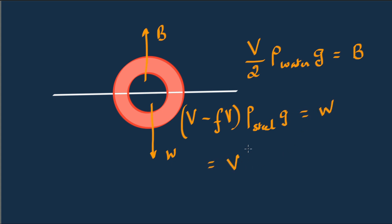This is V times 1 minus F, and the density of steel is given as 8 times the density of water, times g.